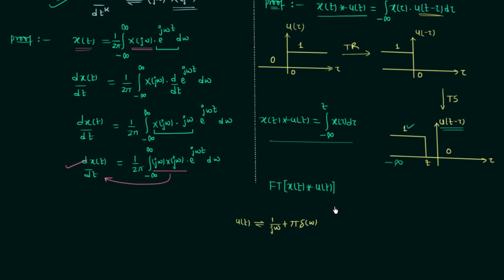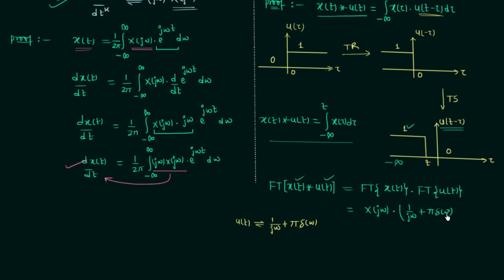We will use the convolution in time property: when two time domain signals are convoluted, their Fourier transform equals the product of their individual Fourier transforms. So the Fourier transform of x(t)*u(t) equals X(jω) multiplied by [1/(jω) + π·δ(ω)]. Opening the bracket, we get X(jω)/(jω) plus π·X(jω)·δ(ω).